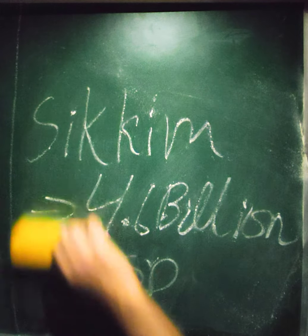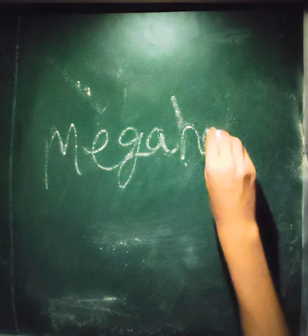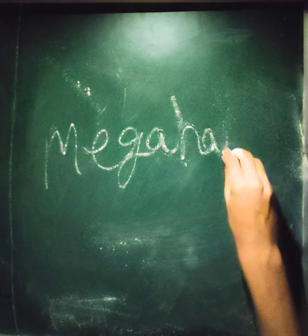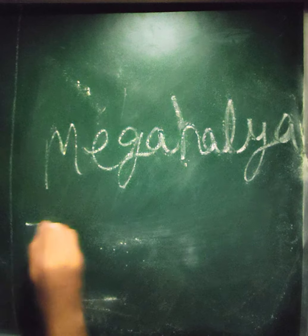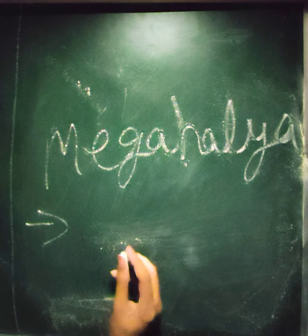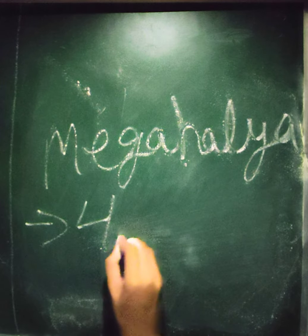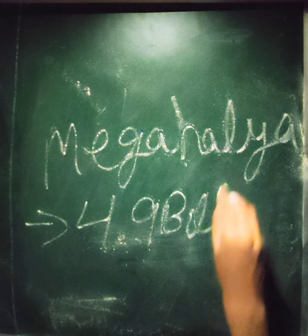The next state of this zone is Meghalaya, and the total GDP of Meghalaya state is 4.9 billion US dollars.